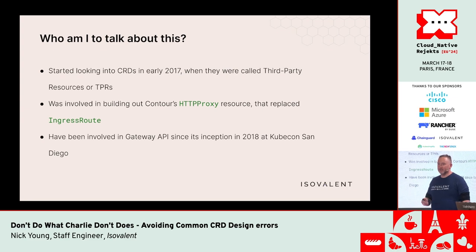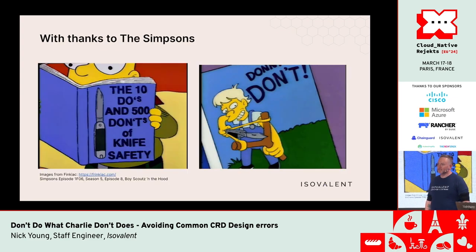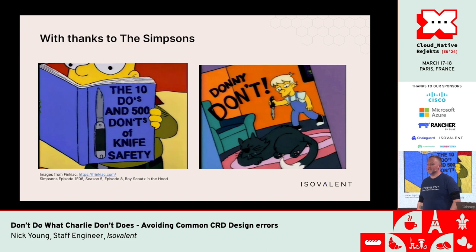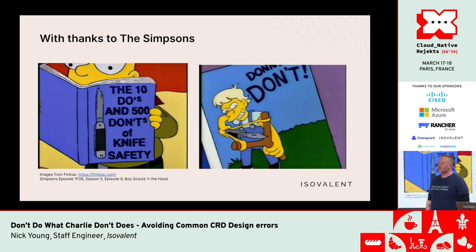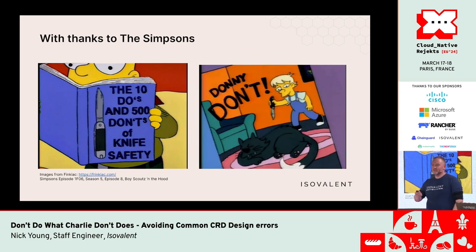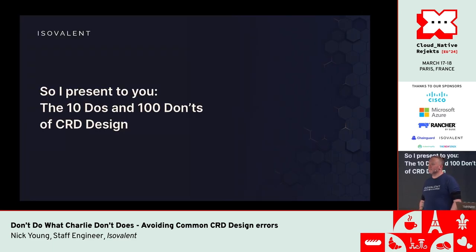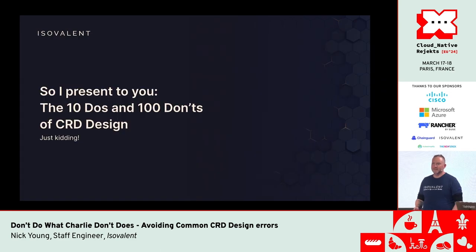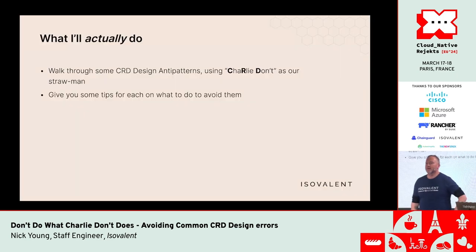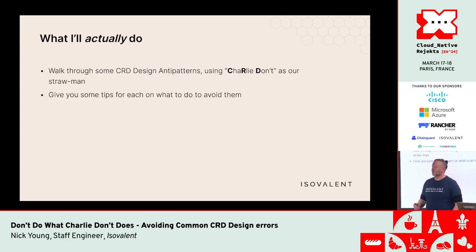The talk is framed around 'Charlie Don't' — inspired by a Simpsons episode where Bart reads the '10 do's and 500 don'ts of knife safety' with a section called 'Don't Do What Donnie Don't Does.' Charlie Don't is a straw man character whose name contains the letters CRD, and will be used to illustrate CRD design anti-patterns and tips to avoid them.